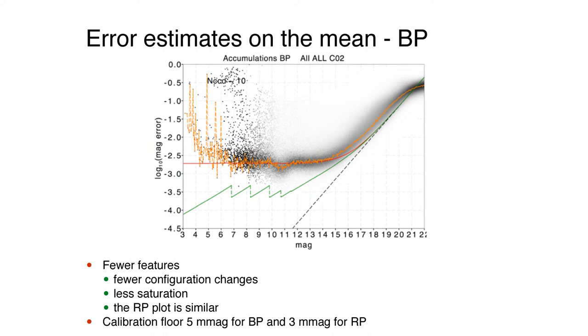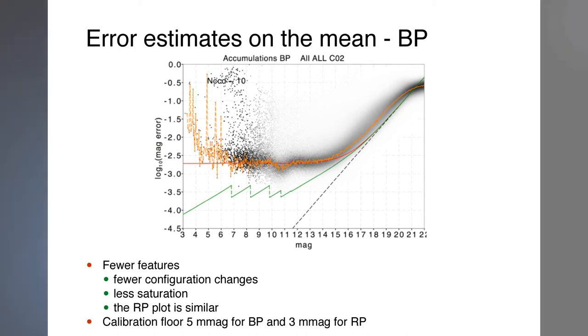the precision is limited by the quality of the current calibration and which reaches a natural calibration floor. Note that a typical source will have about twice the number of observations as shown in these plots and will consequently have better precisions.